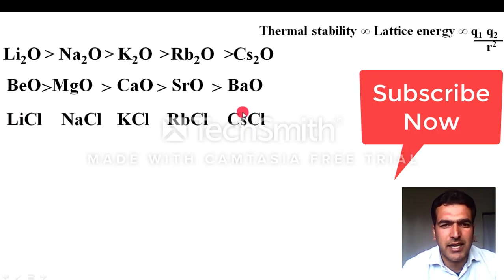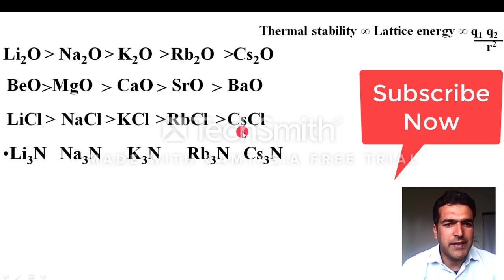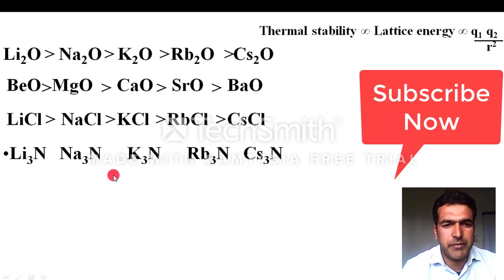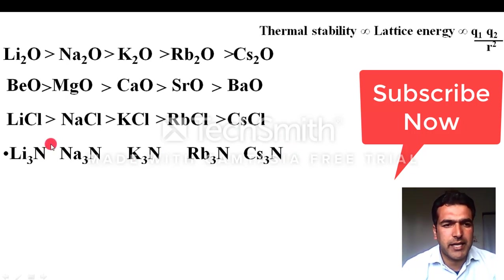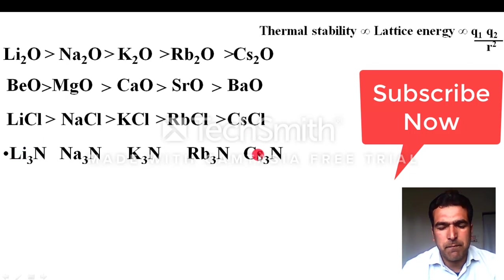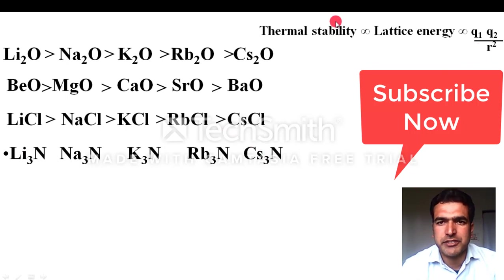Moving from lithium to cesium, size increases, so the distance r increases, lattice energy decreases, and thermal stability decreases. Therefore, LiCl is more stable than CsCl. Now for nitrides of Group 1 — lithium nitride, sodium nitride, potassium nitride, rubidium nitride, and cesium nitride — nitride is again a monoatomic anion. As you move from lithium to cesium, r increases, so thermal stability decreases: LiN3 is most stable.